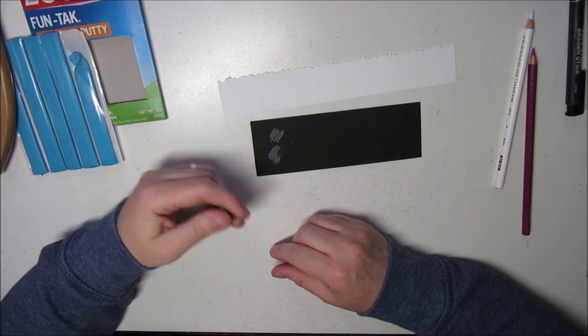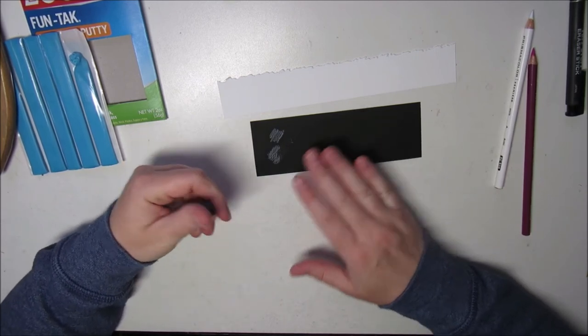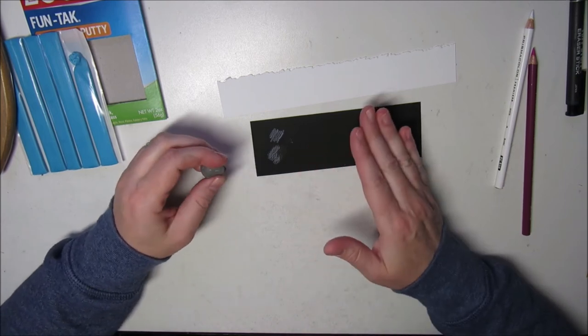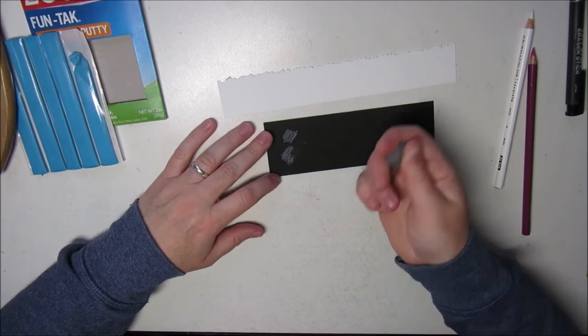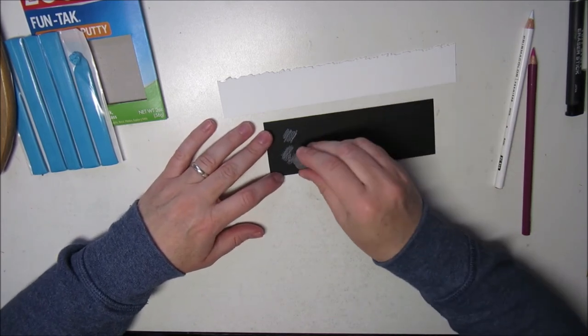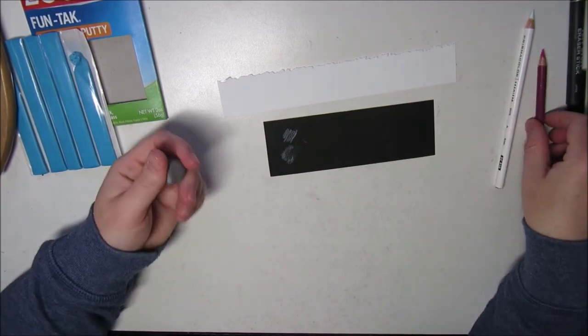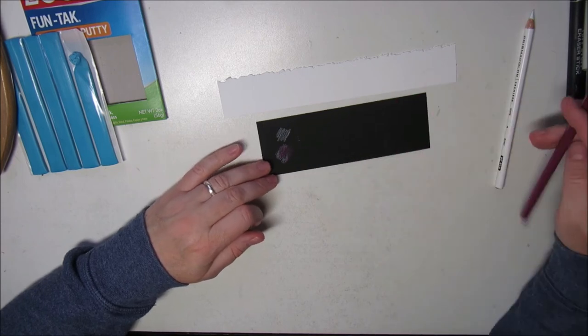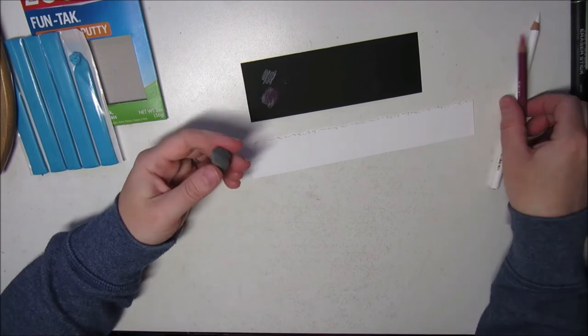But if you've overworked your layers and put too much and need to add another color, but you can't because it's already saturated, you can just go ahead and dab your mounting putty and remove some of the pencils and then go over it again with your pencil. And you should be able to add more layers. So it's a great eraser as well.